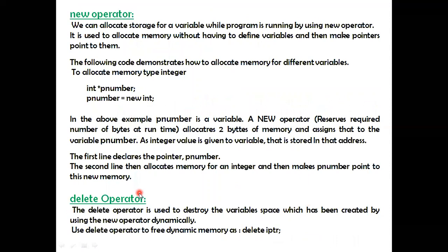We can allocate storage for a variable while the program is running using the new operator. It is used to allocate memory without having to define variables and then make pointers point to them. For example, to allocate memory for an integer, the first line 'int *p_number' is a pointer variable declaration, and the second line assigns allocated memory to it.